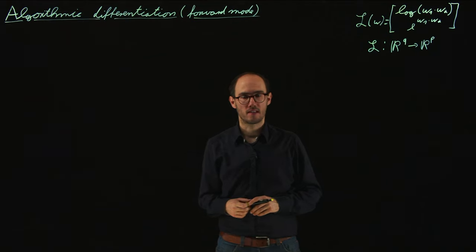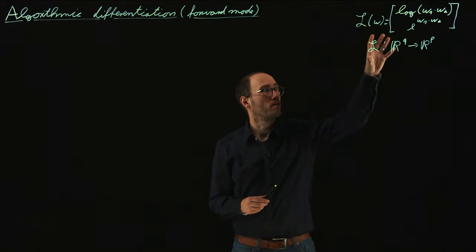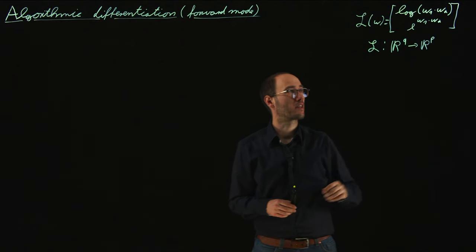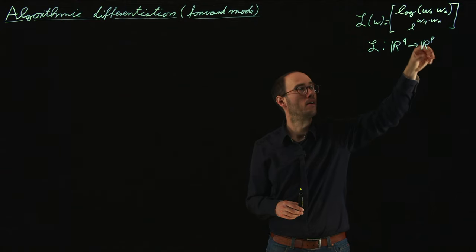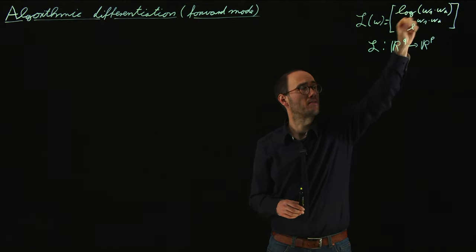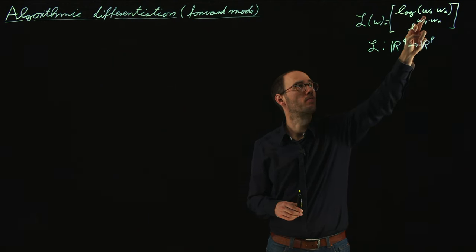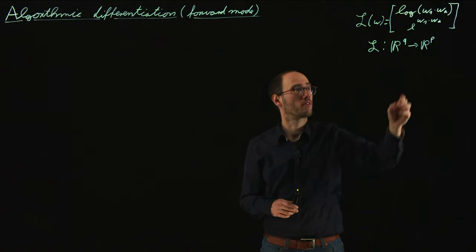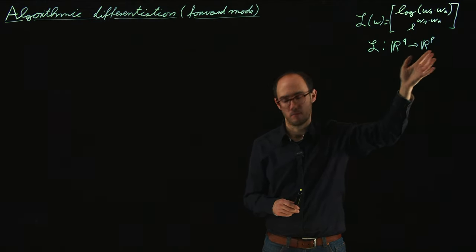In order to discuss that, I would like to use a very practical example: a cost function L of W, which has basically two outputs — so that's why we denote it as a vectorial output. The outputs are of order P, so two outputs, and we have also Q inputs, which is W — specifically W1 and W2. So Q would be 2 in this example, and P would also be 2.